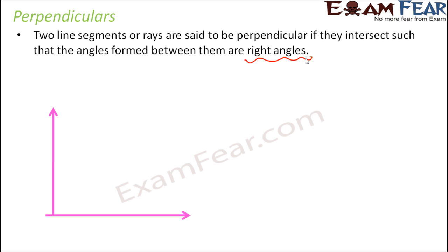So let us take some examples. Here you see these are two lines intersecting at a point. Let's say this point is O and the angle that they make with each other is 90 degrees. So if this is A, B, C, we can say that AB is perpendicular on BC, or BC is perpendicular on AB.